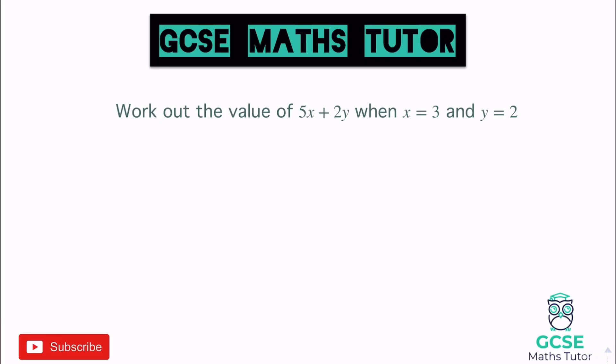It says: work out the value of 5x + 2y when x is 3 and y is 2. So 5x means 5 lots of x, and 2y means 2 lots of y. If x is 3, all we need to do is substitute that in, and when y is 2, we'll sub that in as well.